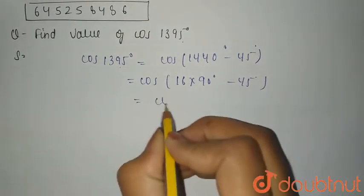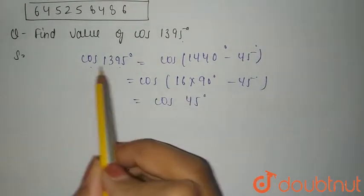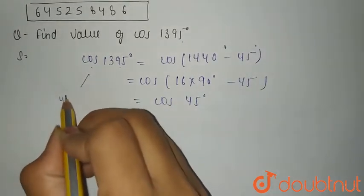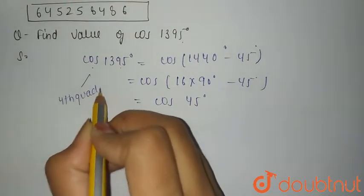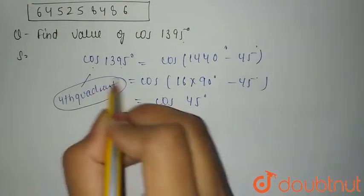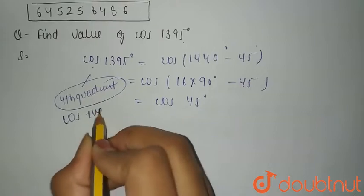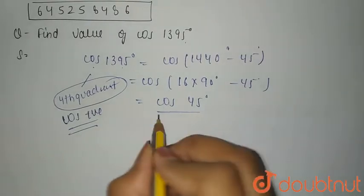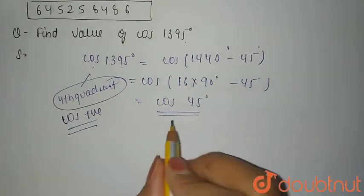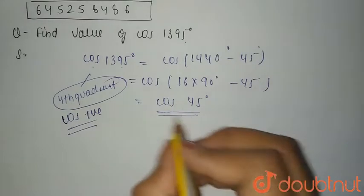And cos of 1395 degree lies in fourth quadrant. The value lies in fourth quadrant, and in fourth quadrant you know that cos is positive. So when cos is positive, you have cos 45 degree as it is, with no negative sign.